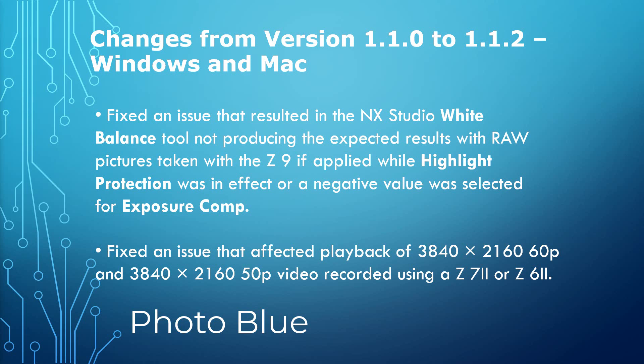The second issue fixed a problem that affected playback of 3840x2160 60p and 3840x2160 50p video recorded using a Z7 Mark II or a Z6 Mark II. So the only cameras that this update affected were the Z9 and the version 2 of the Z7 and the Z6.